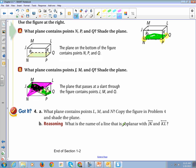Copy the figure in problem four and shade the plane. What is the name of the line that is coplanar with JK? And K, L. That's the name of the line that is coplanar. So on the same plane. How about JM? Done.